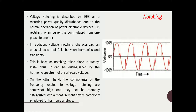Notching is a result of normal operation of some of the devices connected to the power system. Voltage notching characterizes an unusual case that falls between harmonics and transients — we cannot categorize notching as a harmonic event or a transient. This is because notching takes place in the steady state condition; it is not in the transient period and not due to some external reasons, but due to the normal operation of the devices connected to the power system.